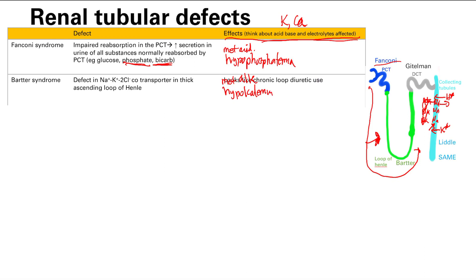What about calcium? Remember, loop diuretics increase urinary calcium and thus cause decreased calcium in the blood — that's hypocalcemia. That's due to decreased potassium intake, so there's decreased back-leak and less calcium paracellular reabsorption.